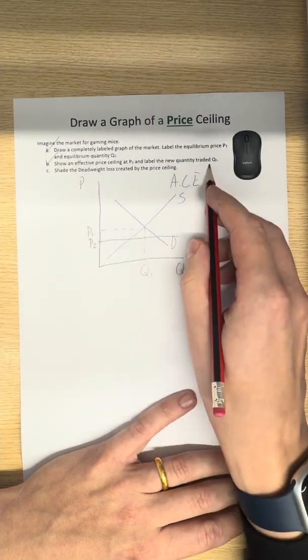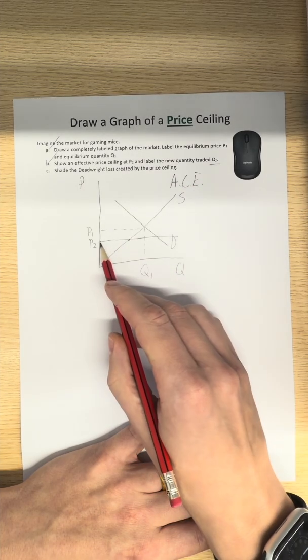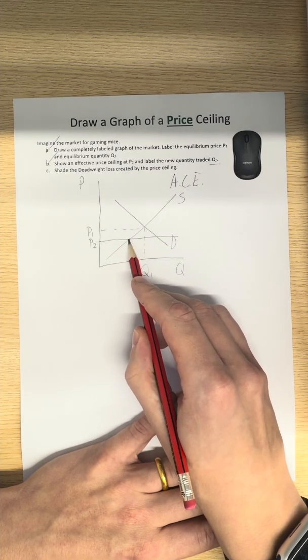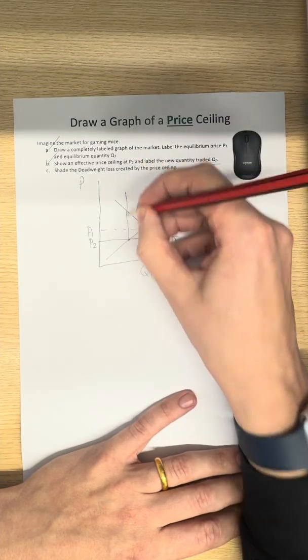Oh, wait. Sorry. What's the new quantity traded? So, wherever we drew the new price, wherever that intersects the first curve, here it intersects the supply. That's going to tell us our quantity traded.